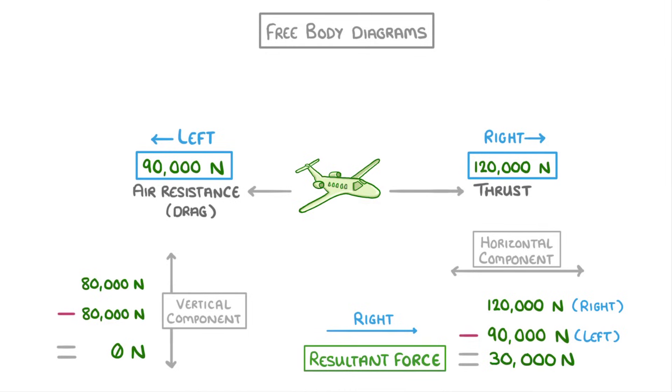So overall, taking into account the vertical and horizontal components, we'd still have an overall resultant force of 30,000 newtons to the right.